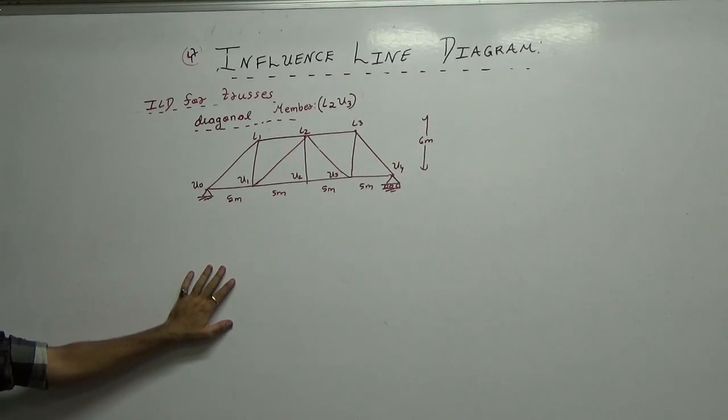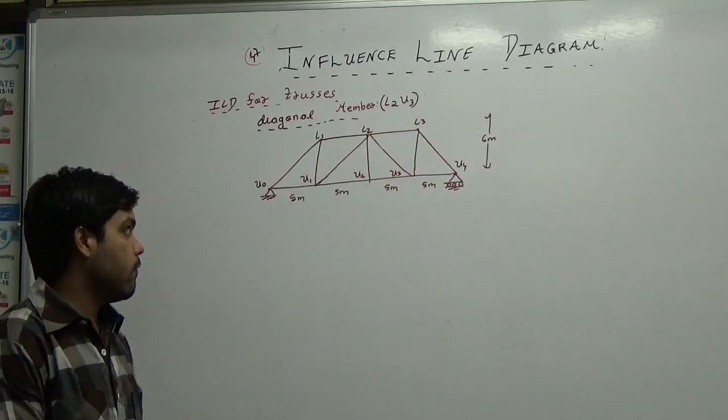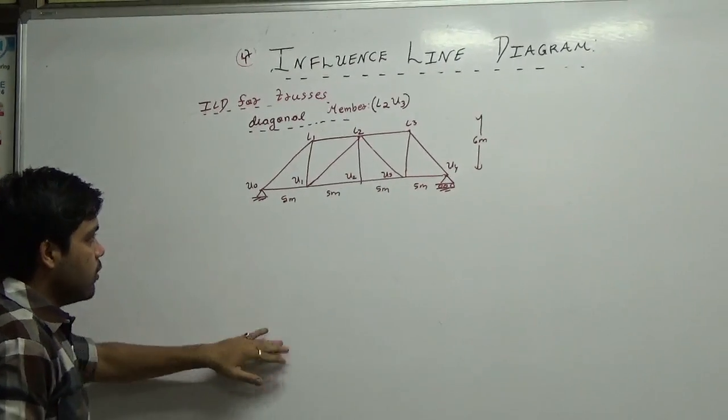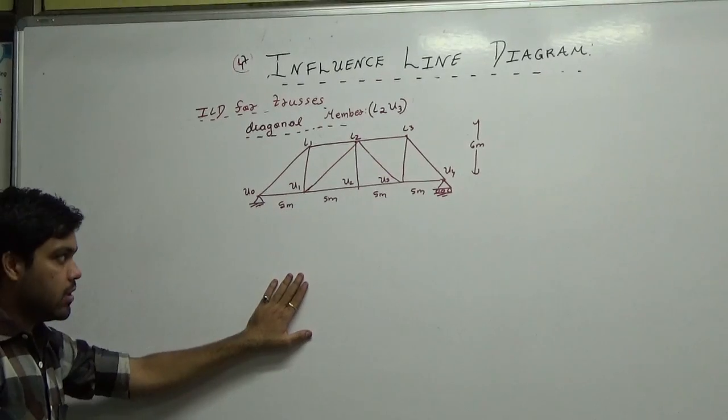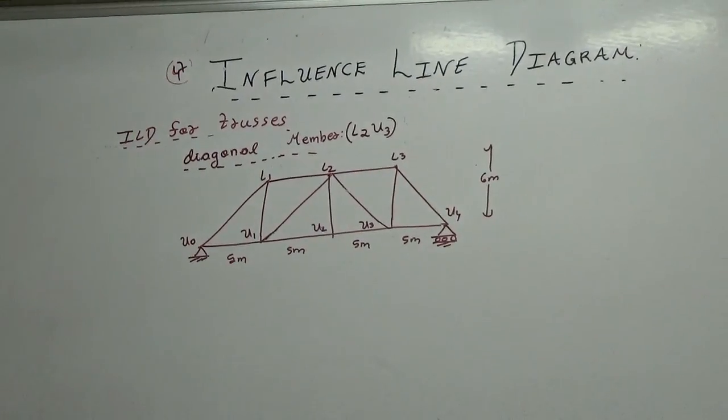Last lecture of influence line diagram. In this lecture we are going to see about an influence line diagram for this truss for the diagonal member. We know that the diagonal member will be sometimes in compression and sometimes in tension.